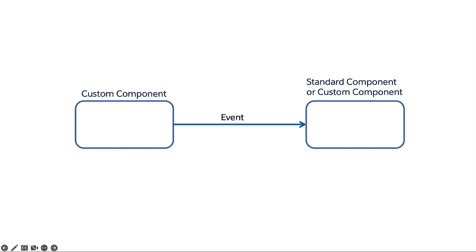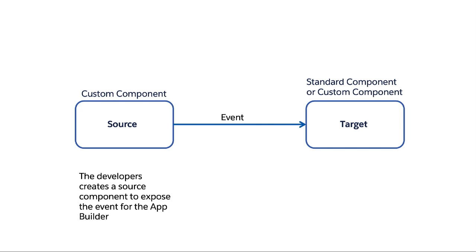As said in the description, a custom component can send an event to another component. This custom component is called the source component, and the other component is called the target component. A developer creates the source component that fires a custom event. Later, the admin can choose one or more target components that listen to this event and dynamically configure these interactions in the Lightning App Builder.